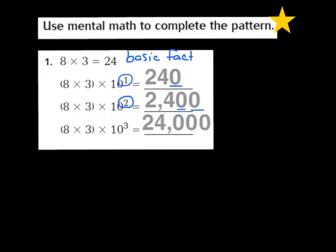Let's take a look at the next part in this pattern. They now give us 8 times 3, and this time we're going to multiply it by the third power of 10. My exponent is a 3, and when I look at my products, I know that I now have three 0s in my product. That's how I'm going to use a basic fact and a pattern to find a product.